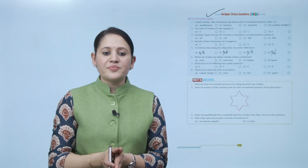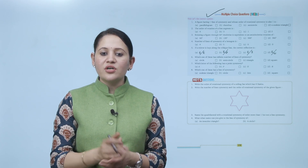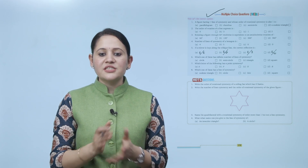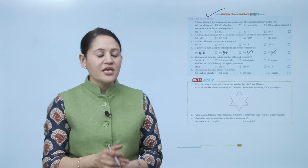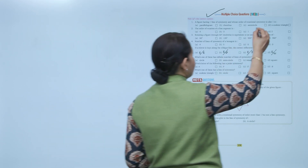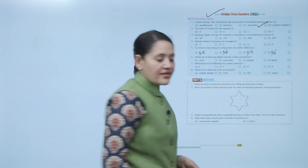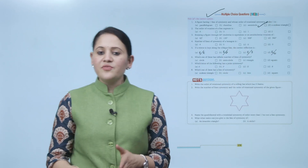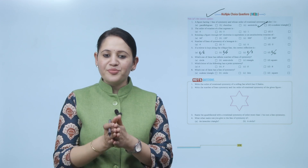Multiple choice question: A figure having one line of symmetry and whose order of rotational symmetry is also one — the answer is a semicircle, so C is the correct answer. Here we end the chapter. I hope you understood it well. Please practice it.